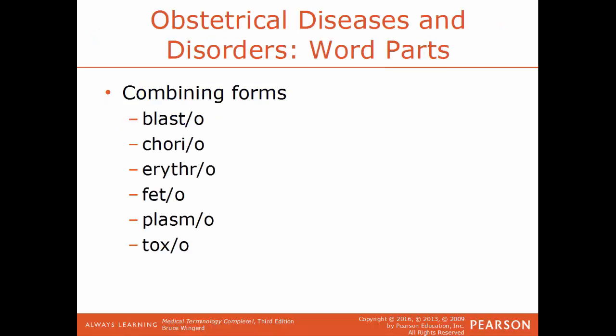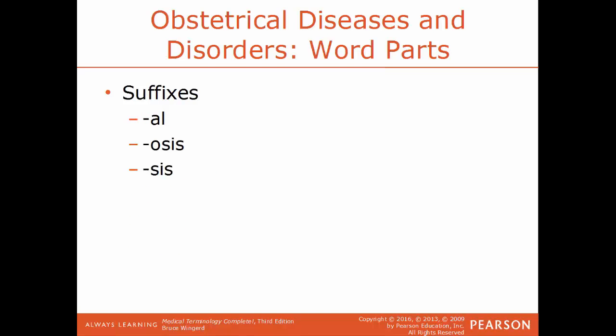Diseases and disorders of obstetrics and word parts: combining forms include Blasto for developing cell, Chorio for the chorion (outermost layer of a developing embryo), Erythro for red, Feeto for fetus, Plasmo for development or formation, and Toxo for poison. Suffixes include Al for pertaining to, Osis for abnormal condition, and Cis for state of or condition.